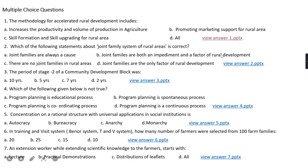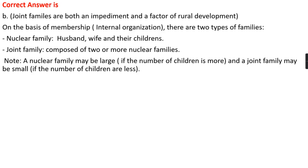The right answer is option B, that is joint families are both an impediment and a factor of rural development. On the basis of membership or internal organization, families are categorized into two types: nuclear family and joint family. Nuclear family includes husband, wife, and their children, while joint family is composed of two or more nuclear families. Note that nuclear family may be large if the number of children is more, and a joint family may be small if the number of children are less.